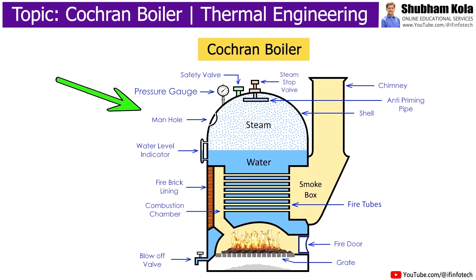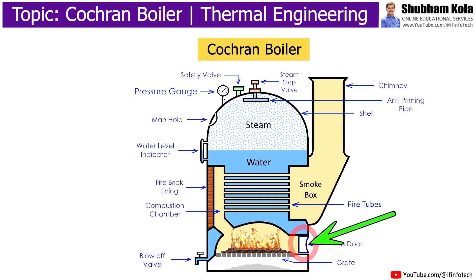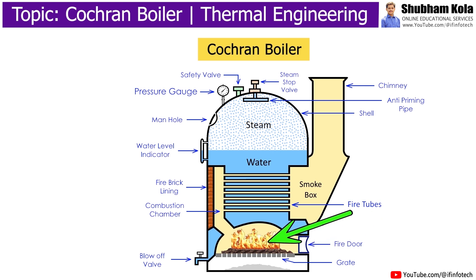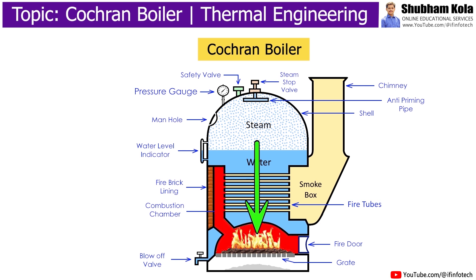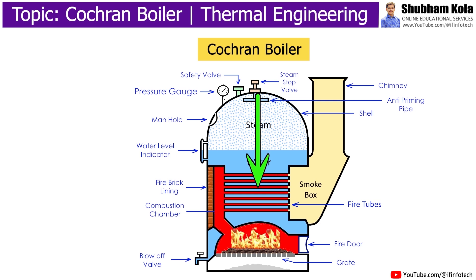During working, coal is placed on the grate through the fire door and fire is provided to start burning of fuel. The burning of fuel generates hot fuel gases and they come to the combustion chamber. These hot fuel gases go further into the tubes.